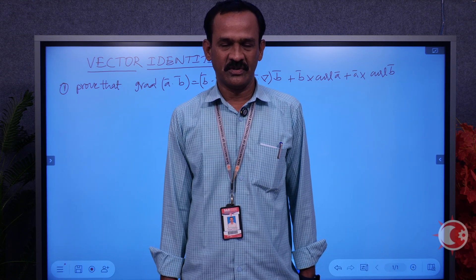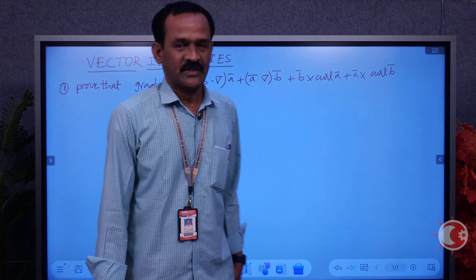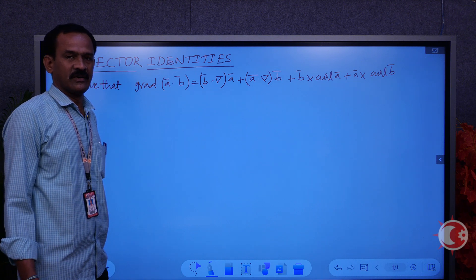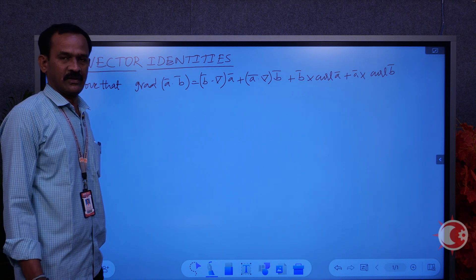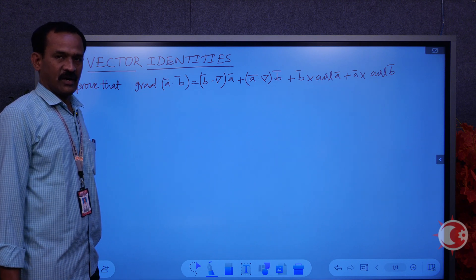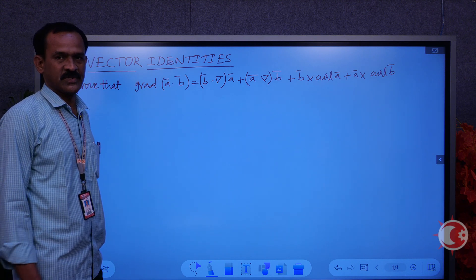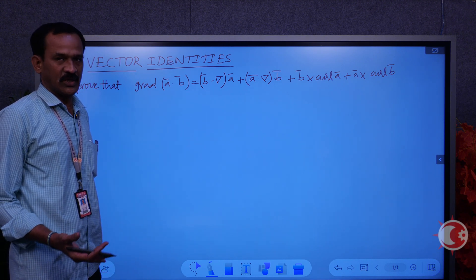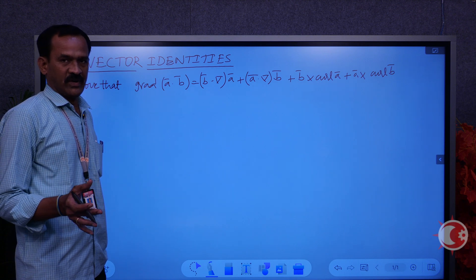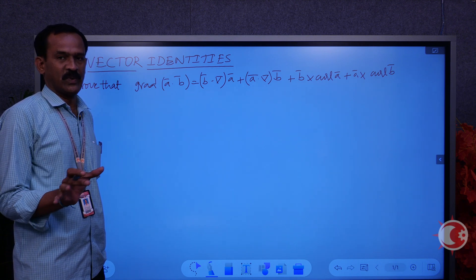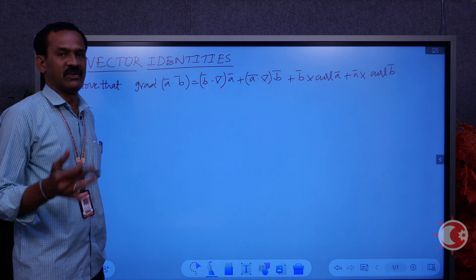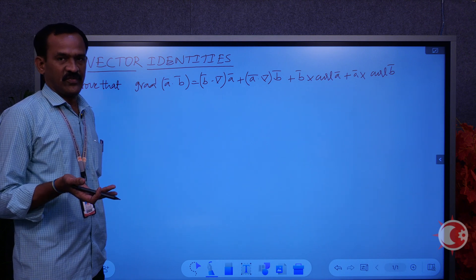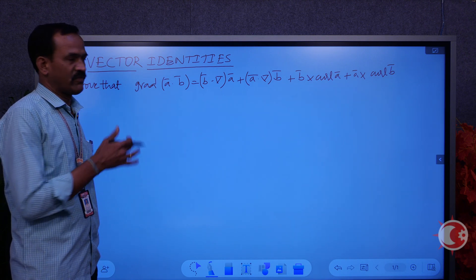Today I would like to discuss vector identities. You are all familiar with the basic concepts of vectors — gradient of a scalar point function, divergence of a vector point function, and curl of a vector point function. These are the basic concepts needed for vector identities. The term 'identity' means it holds for everything. The difference between equality and identity is that equality compares two parts, while identity holds for every function — if you substitute any function, it will hold. That is the meaning of identity.